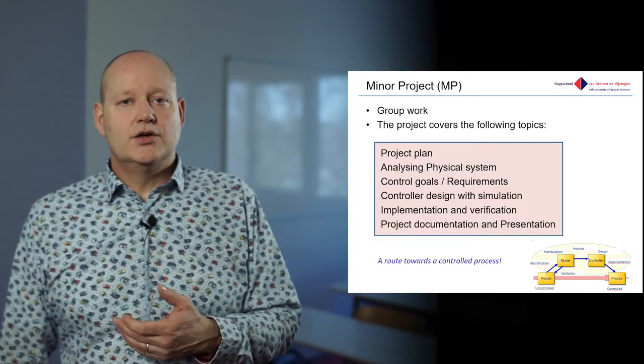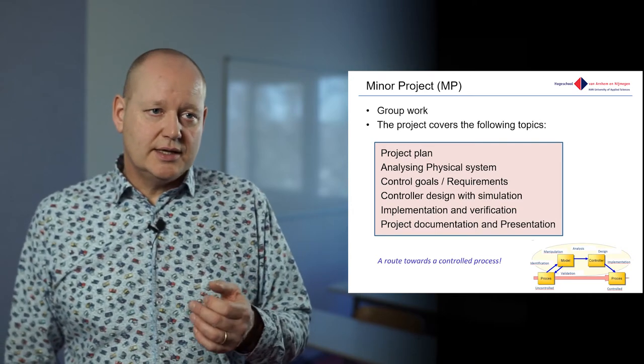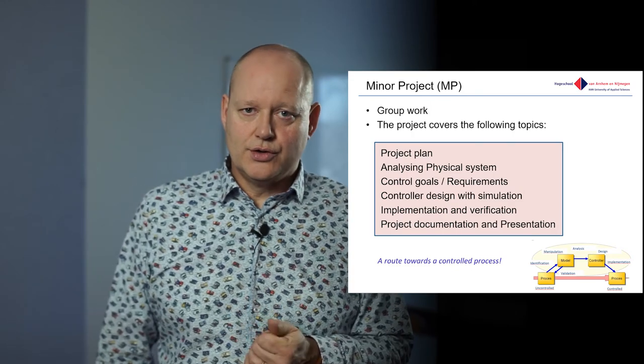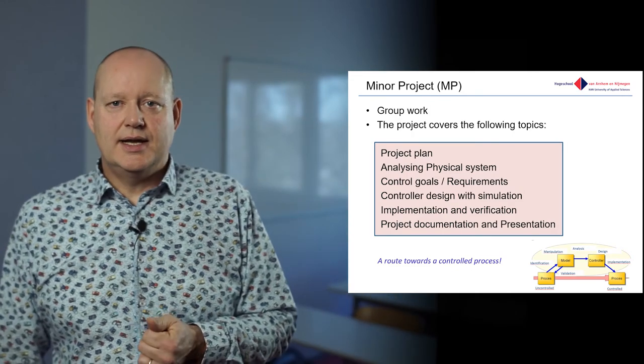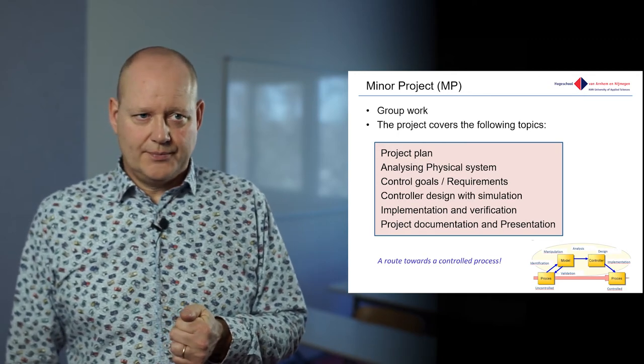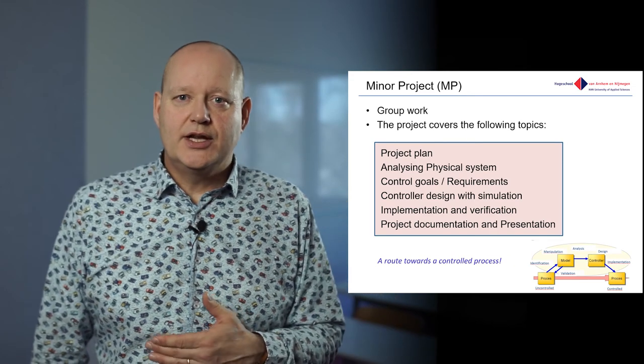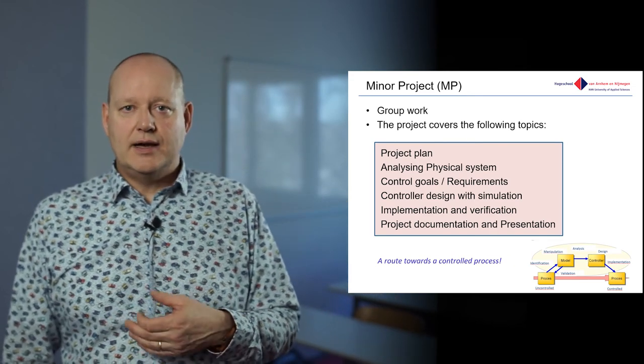In the minor project you will do group work. You work together with four students and try to create a controlled system. You start with a small project plan, analyzing the physical system. You set your requirements, or your control goals, and then start to design a controller in software. After you have designed it in the software, you implement it into the setup and check its performance, so you validate the behavior of the controlled system. In this way you have a route towards a controlled process. Thank you.